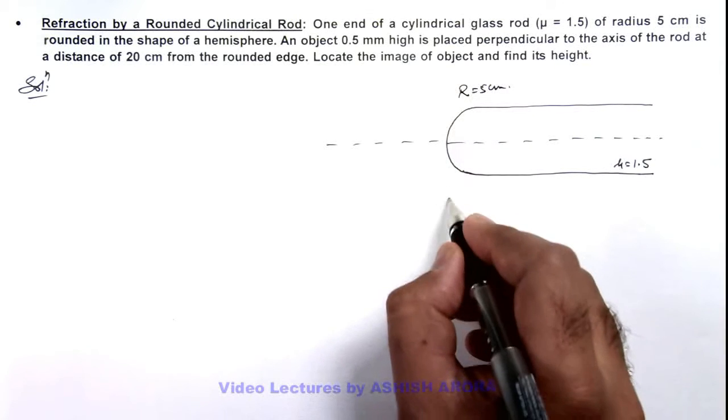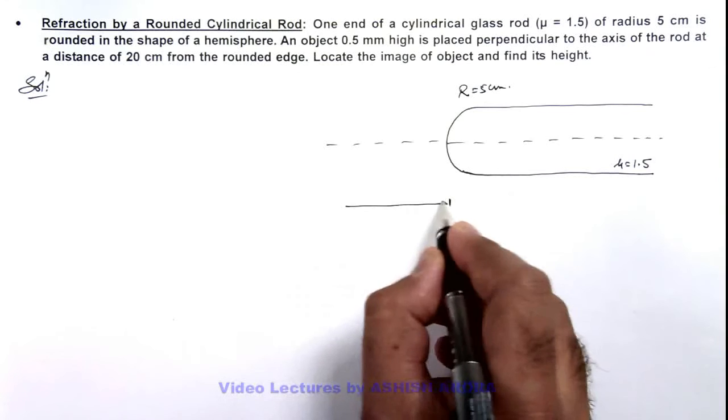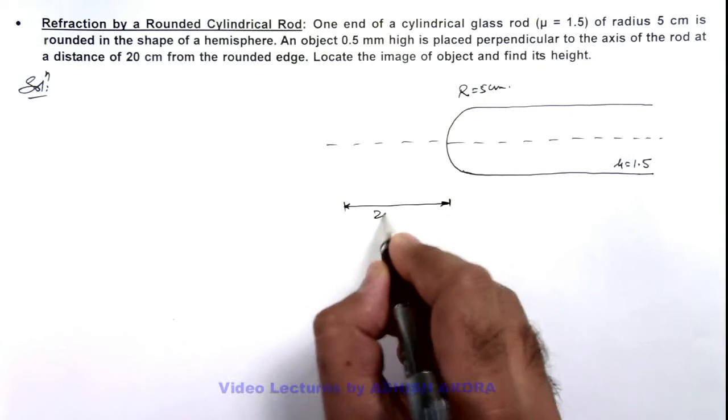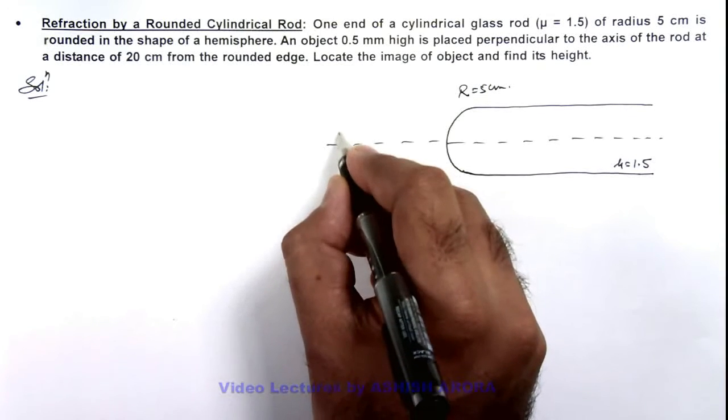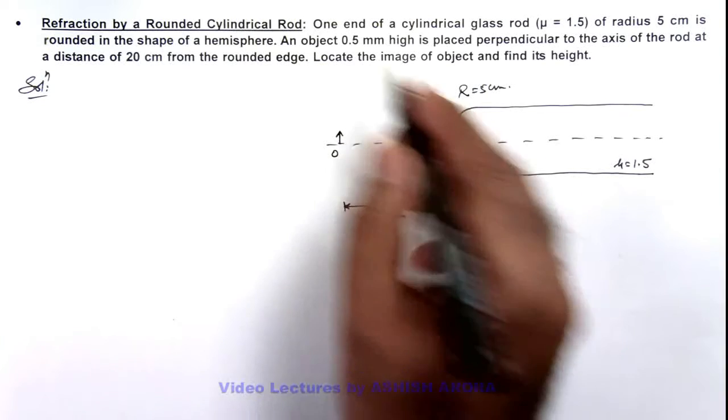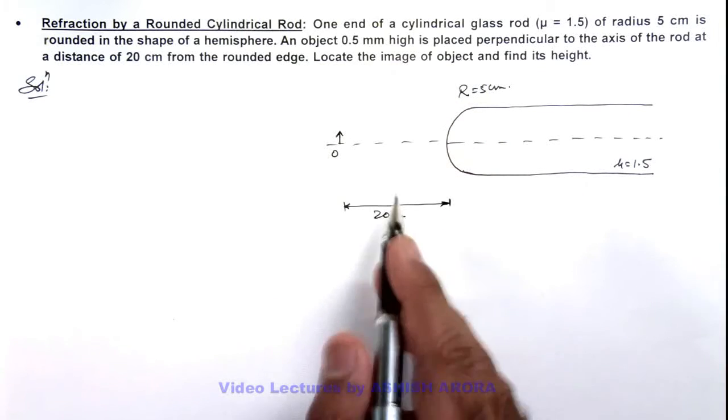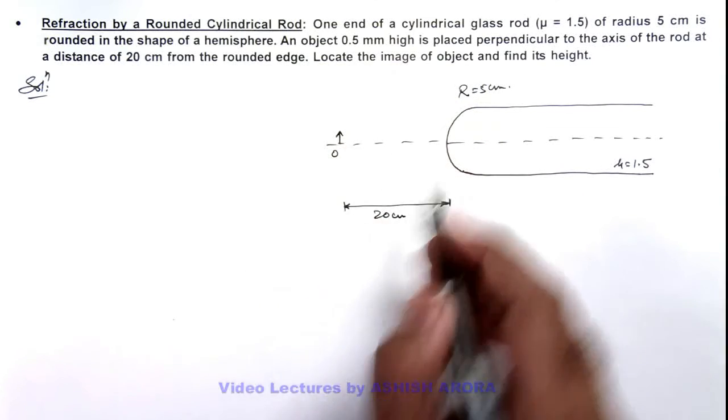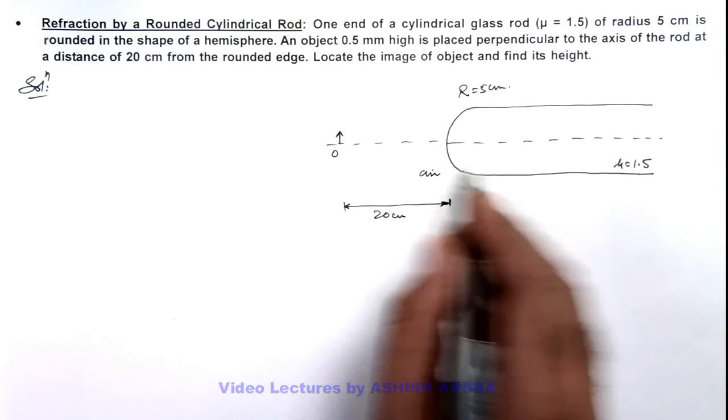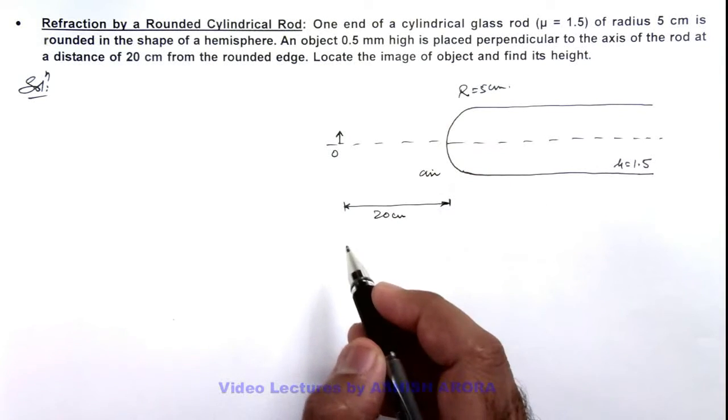And from the front face at a distance of 20 centimeters we place an object which is of height 0.5 mm. Here when light is refracted from air to glass, here we need to use the refraction formula at this rounded edge.